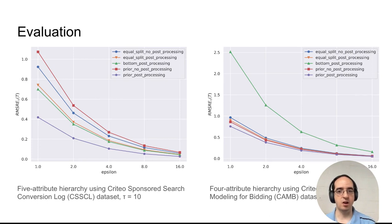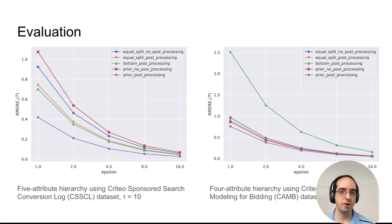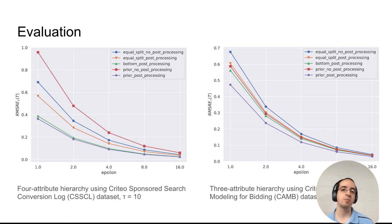Our results show that our optimized approach consistently outperforms the other methods, sometimes by a substantial margin. Moreover, the other methods perform better or worse on different datasets, so there's not a clear second best method. In some settings, putting all privacy budget on the leaves performs quite well, but in others it doesn't. Our combination of optimizing the allocation of the privacy budget and using the post-processing algorithm to achieve consistency and improve the error of each estimate outperforms the other methods and results in fairly accurate estimation of conversion values. Thank you.